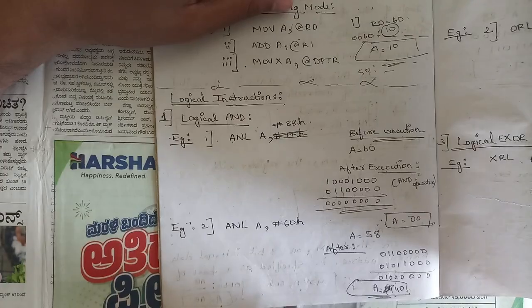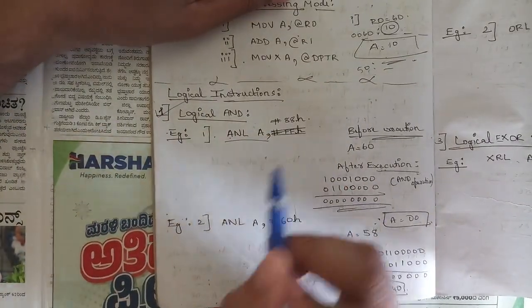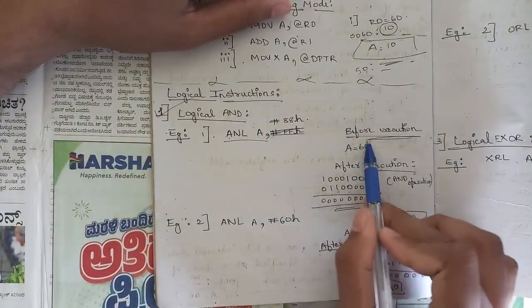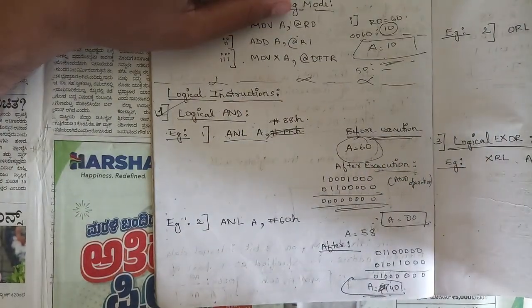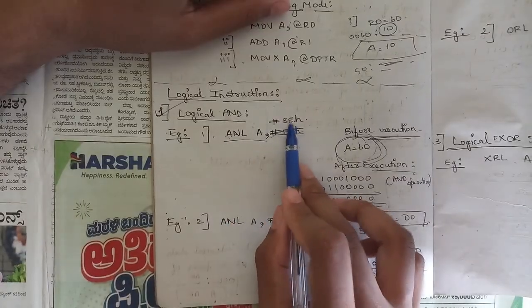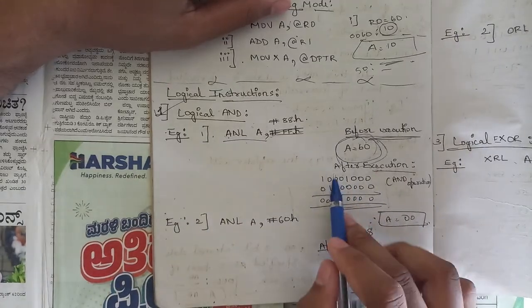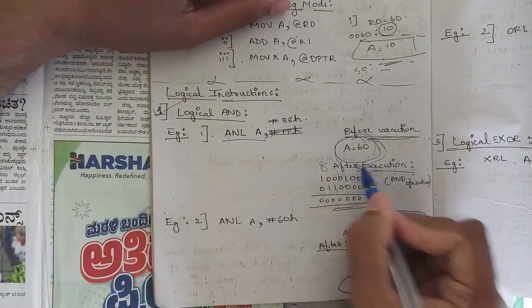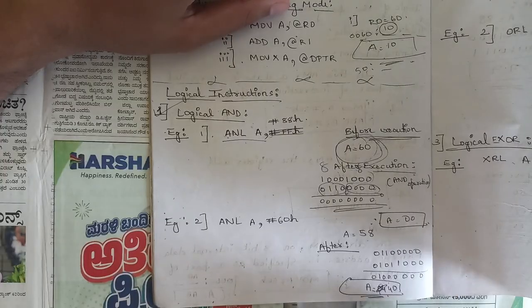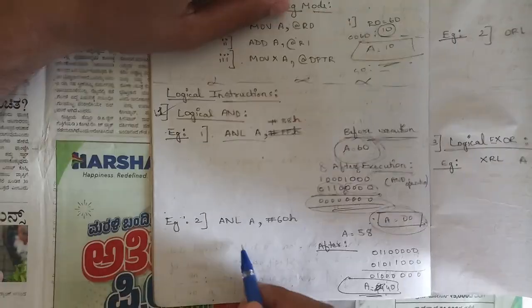Now let's discuss some logical instructions. The first is logical AND — the opcode is ANL. For example, ANL A, #88H. If A is 60H before execution, we perform AND between 60H (0110 0000) and 88H (1000 1000) bit by bit. Since AND is 1 only when both bits are 1, the result here is 00H. So after logical AND, the value of A is 00H.